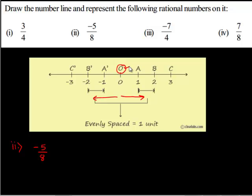Here we have negative 5 upon 8 which is a negative rational number so this will lie to the left of the point O. First we will draw the number line indicating the integers on it. 0 is the central point on the number line.